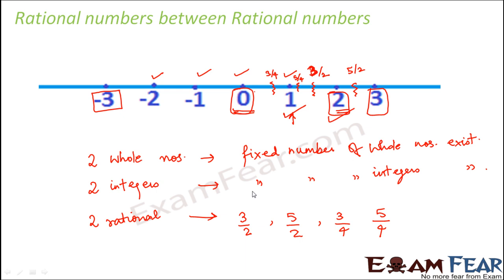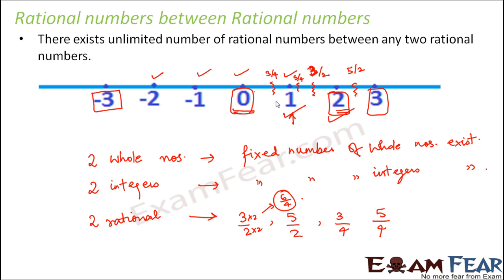For example, multiplying both numerator and denominator of 3/2 by 2 gives 6/4, which is also a rational number between 0 and 3. In this fashion, you can find any number of rational numbers between 0 and 3. There exist unlimited rational numbers between any two rational numbers — whether between 0 and 1, or between 3/4 and 5/4. This is different from whole numbers and integers, where only a fixed number exist between two values.